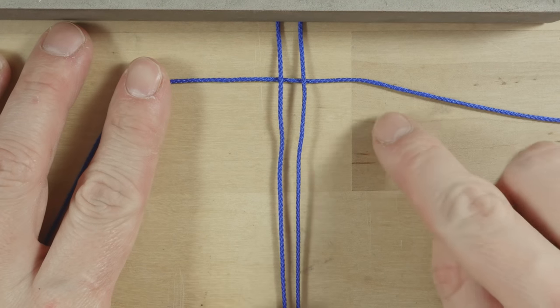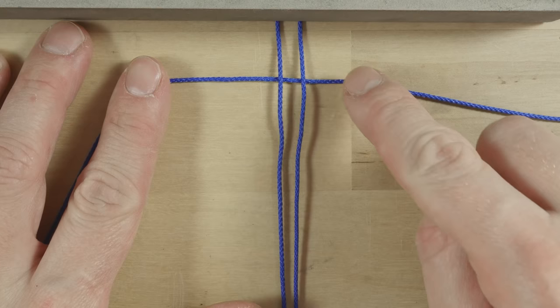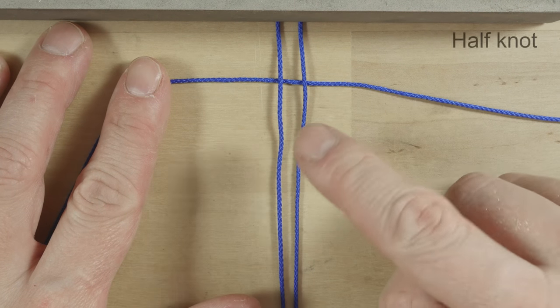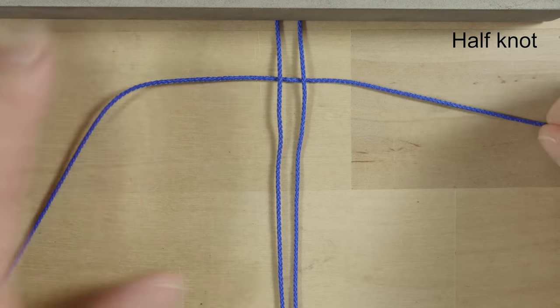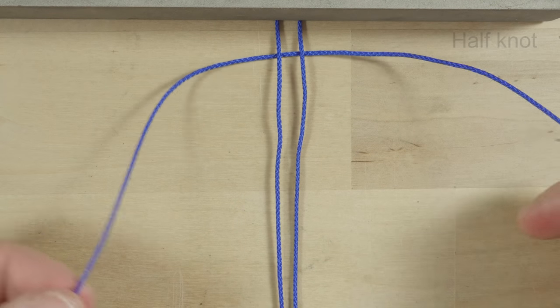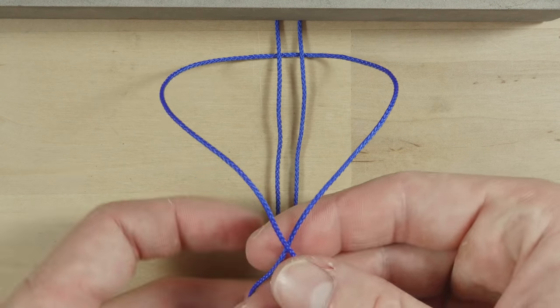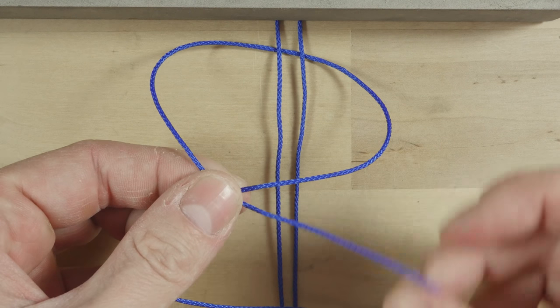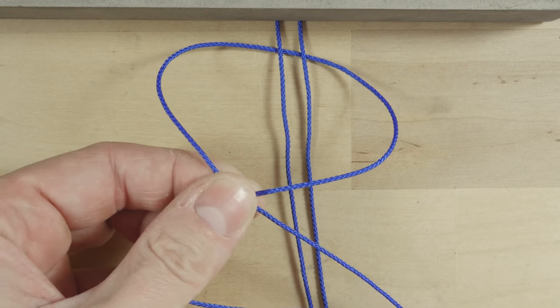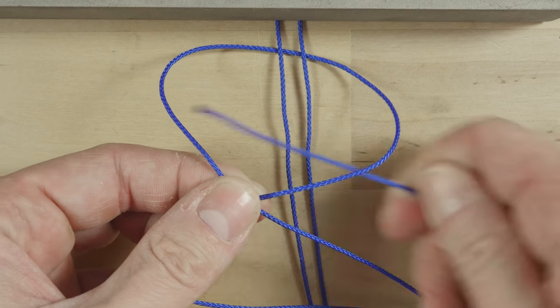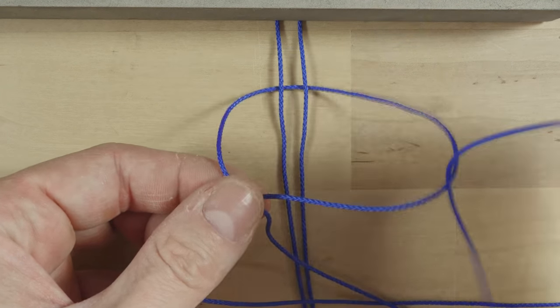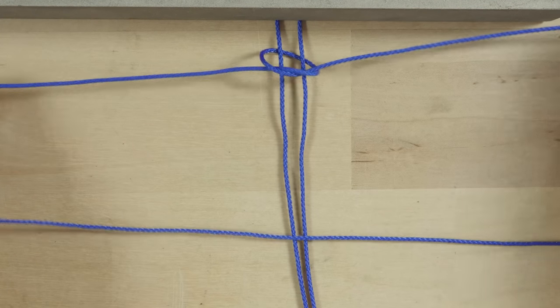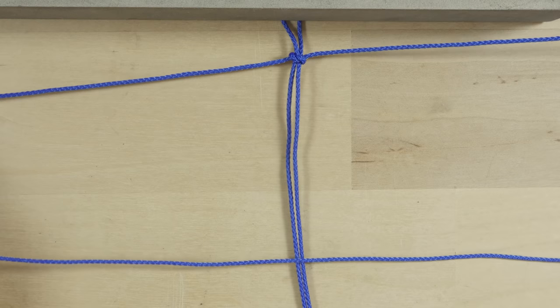Now I'm going to attach my long cord onto the short one using a half knot. So all I'm going to do is cross my ends and pass the left one under and through the loop. Tighten up and you have a half knot.